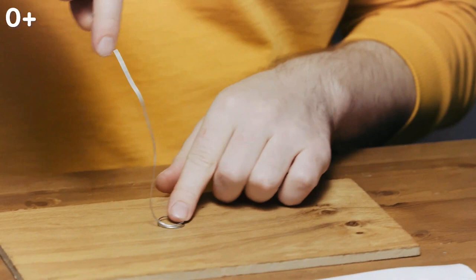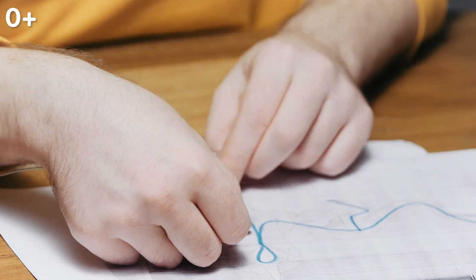Adding a loop to the end of the wire will add stability. Hold the wire up to your drawing and bend it to match the sketch of the frame.